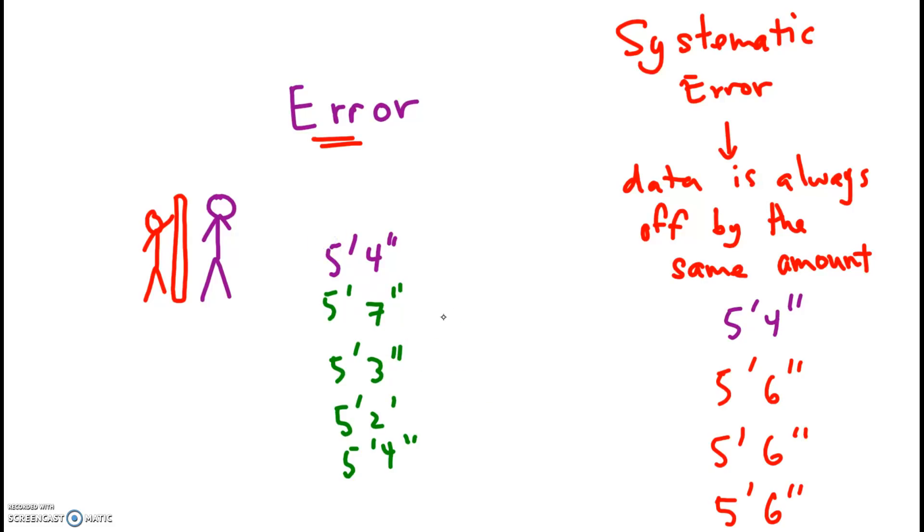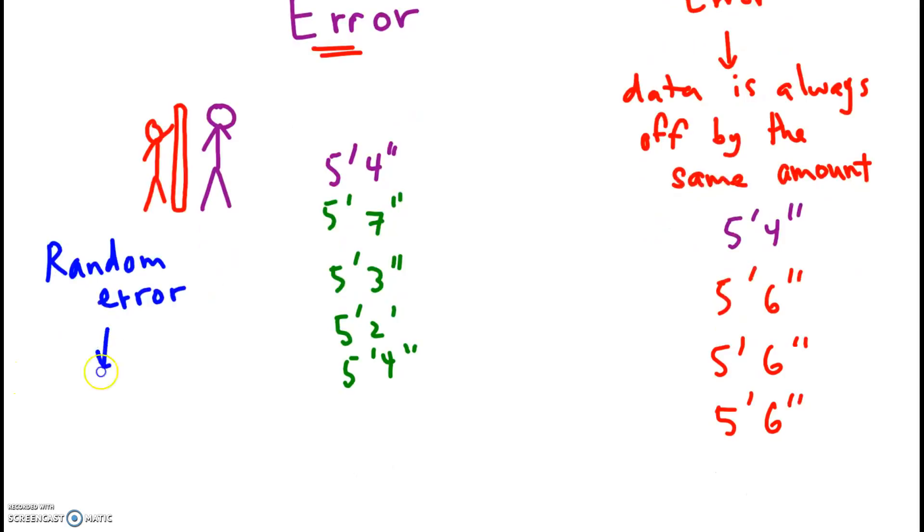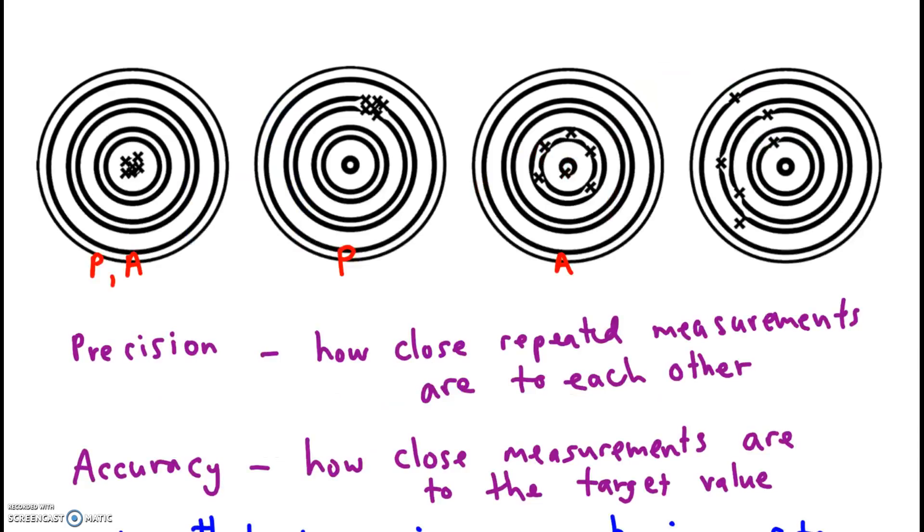Now that error, we say, is random. And the reason is because the measurements fluctuate randomly from the true or target value.